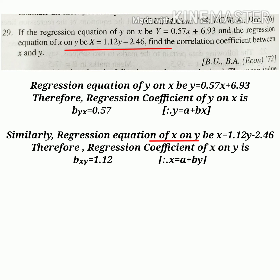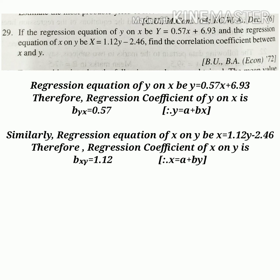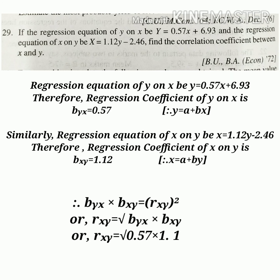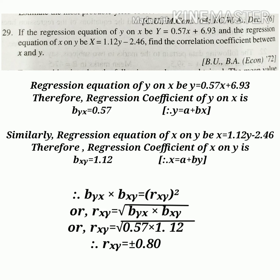Similarly, the regression equation of x on y is given as x = 1.12y − 2.46. Therefore, the regression coefficient of x on y, bxy, is just the coefficient of y on the right, that is 1.12. Now we have both byx and bxy. Applying the formula rxy = √(byx × bxy), we put the values of byx and bxy under the root and get the value of the correlation coefficient rxy = 0.80.